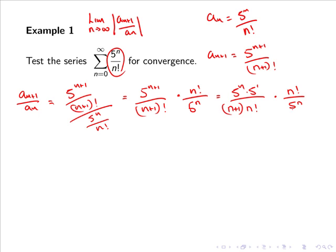And now you can see that the exponentials cancel. So 5^n cancels with 5^n. And the factorials cancel, so n factorial cancels with n factorial. And we are simply left with 5 over n+1.